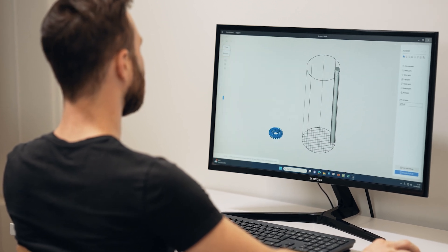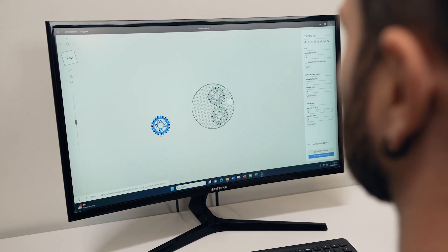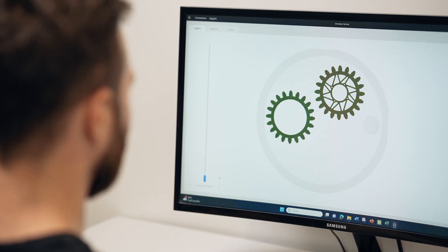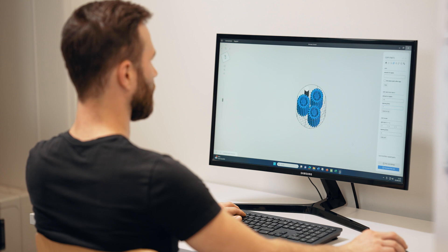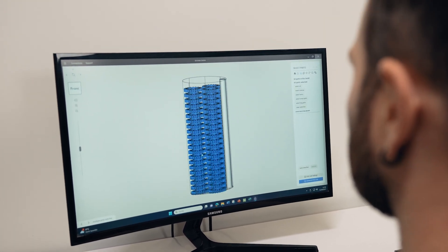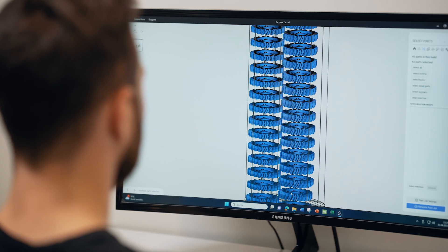First we prepare the job. In the CAD software we finish the part design, then we increase the size of the part by its shrinkage rate, and then we hand over this part to the Sintratec software to prepare and fill up the build job.